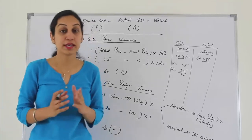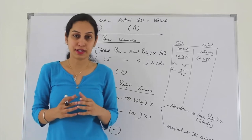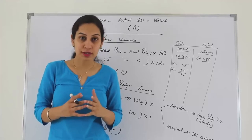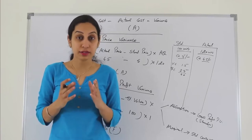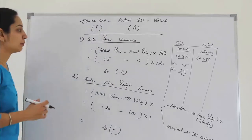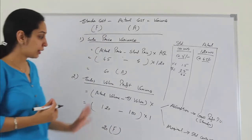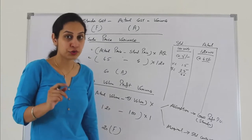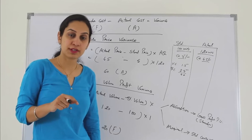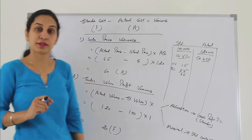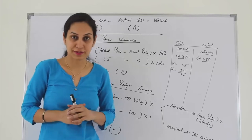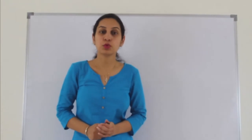Quick recap: two types of sales variance. Selling price variance: actual price minus standard price multiplied by actual quantity. Sales volume profit variance: actual quantity minus standard quantity, multiplied by either standard gross profit per unit (absorption costing) or standard contribution per unit (marginal costing). Once we understand the sales variances, let's move to cost type variances.